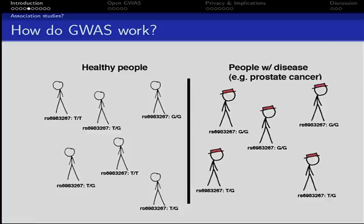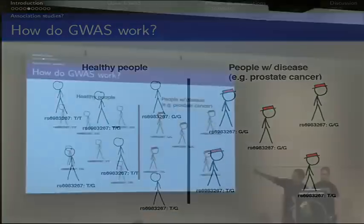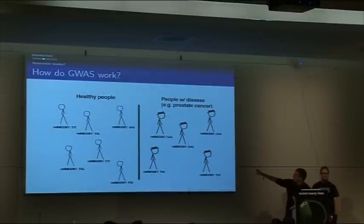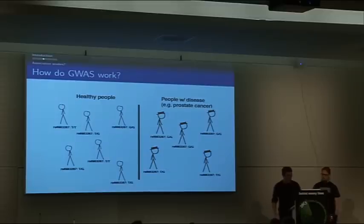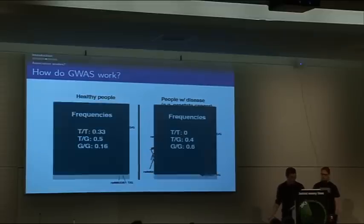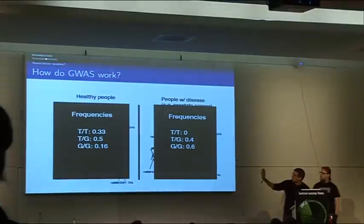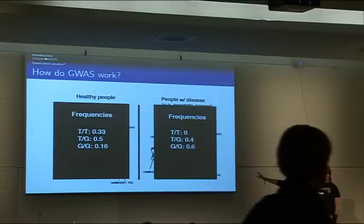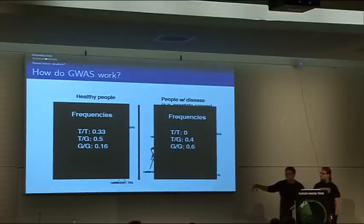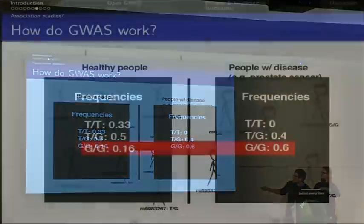Because we are diploids, we have two nucleotides at that position. To the left you see TT, TG, GG, and to the right you see GG, GG, TG. GWAS work by comparing the frequencies: our healthy population has TT 33%, 50% TG, and our prostate cancer population has 60% GG. So that's a big difference, and we can link the GG SNP to prostate cancer.